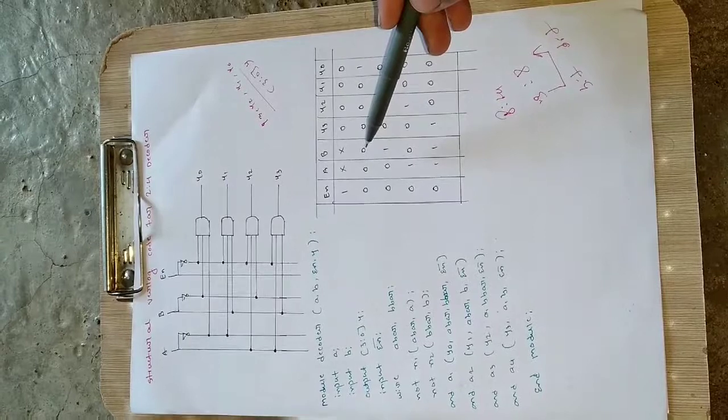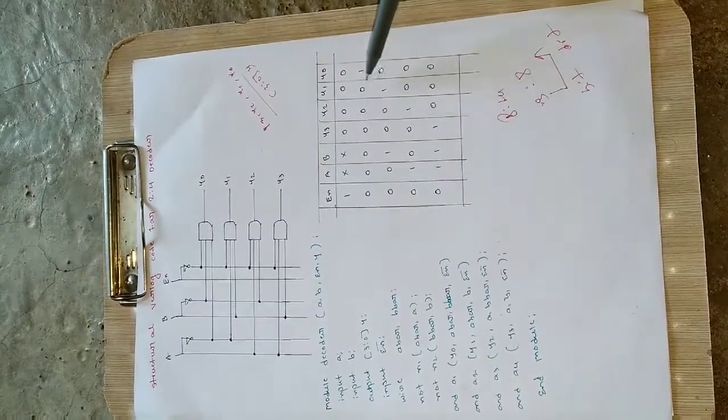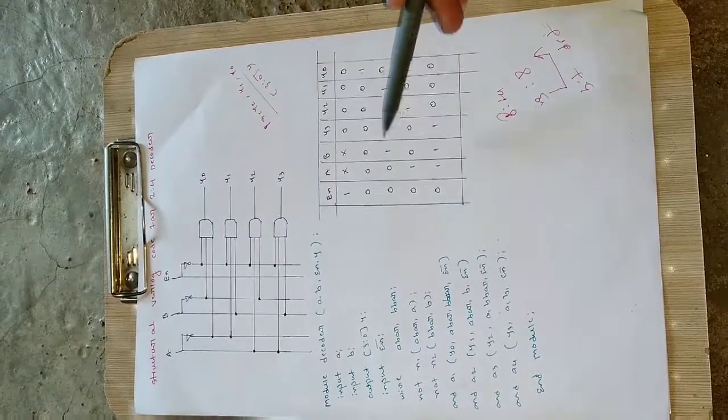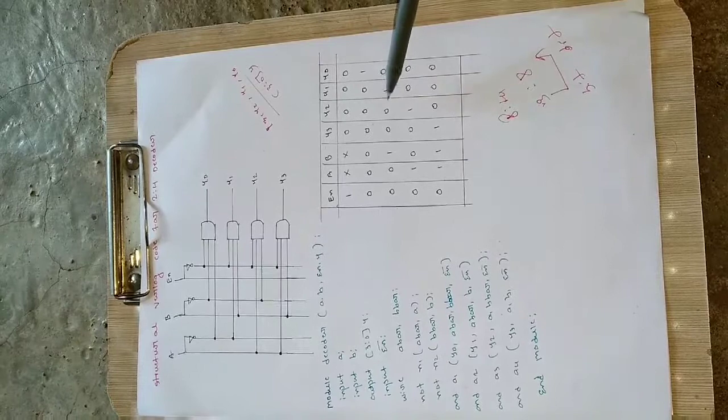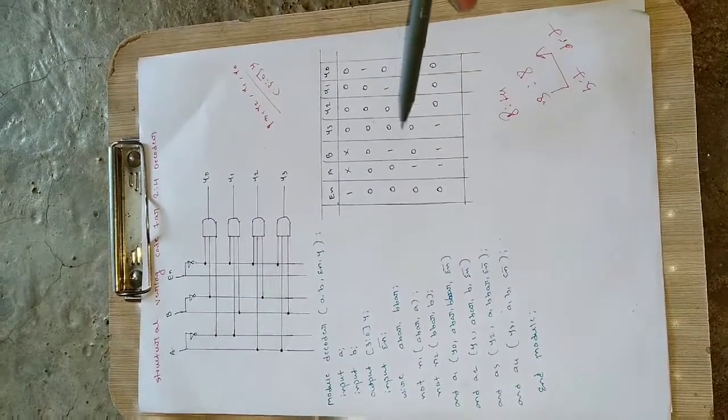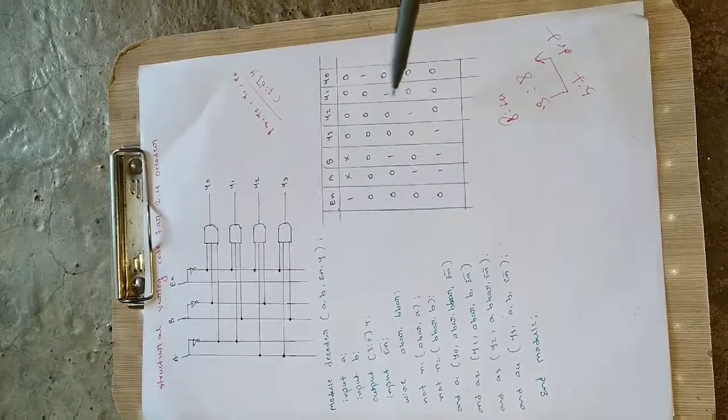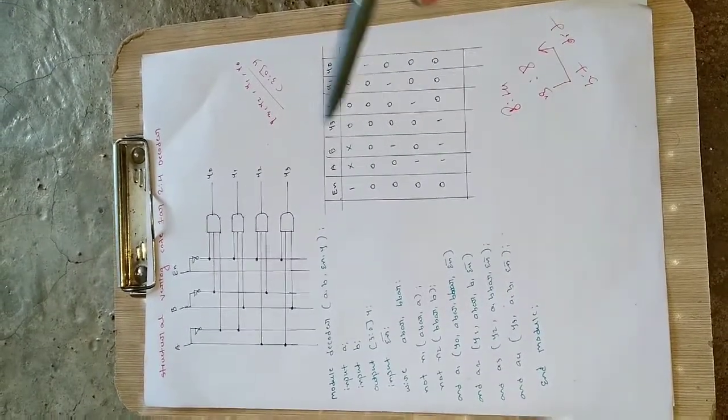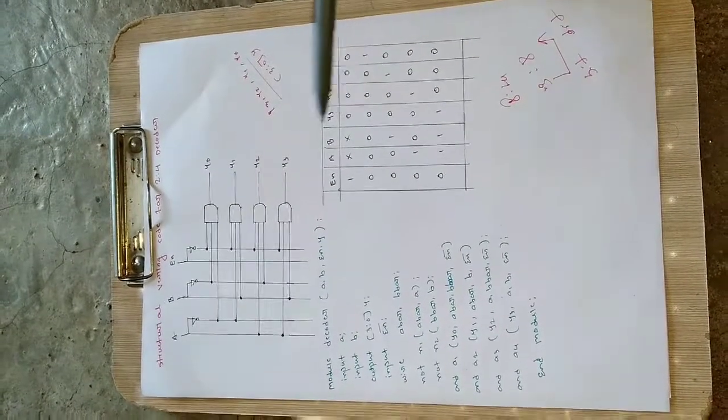If A and B value is 00, when you convert it to decimal it will be 0, so the 0th bit will be high and others will be 0. If it is 01, it becomes 1, so the 1st bit will be high. Similarly, for 10, the 2nd bit will be high, and for 11, the 3rd bit will be high.